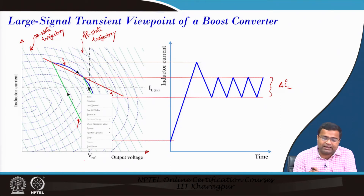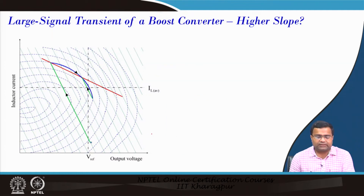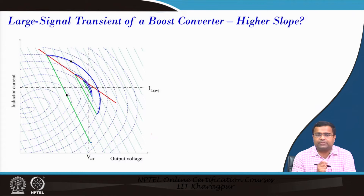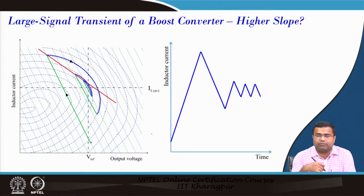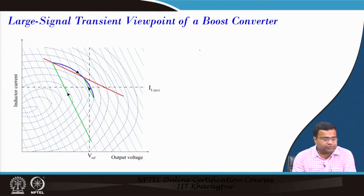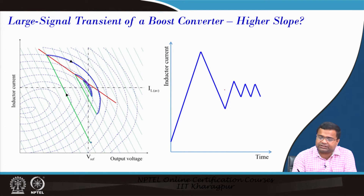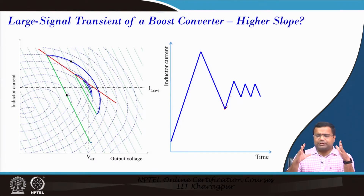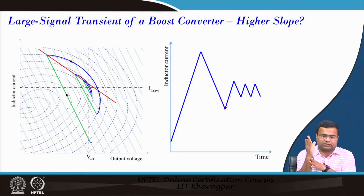What happens if we increase the slope of this line? If we increase the slope, you will find the equivalent current waveform shows increased current overshoot, and also additional transient even after reaching there — meaning there is an additional undershoot. This is because of the fact that we have increased the slope.